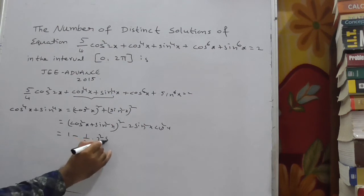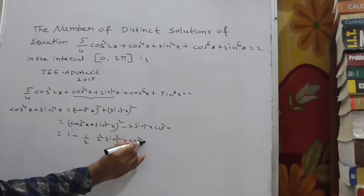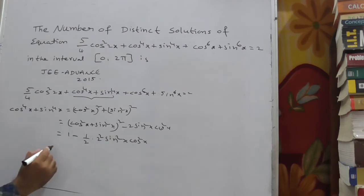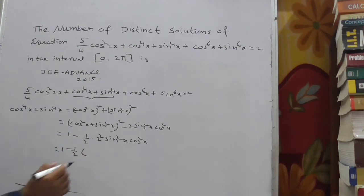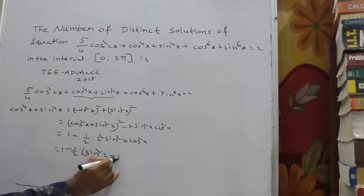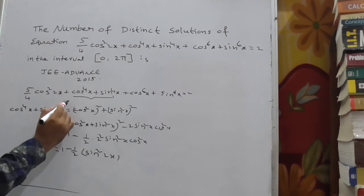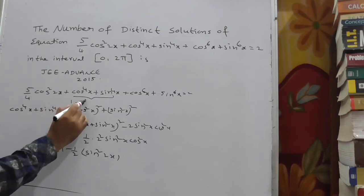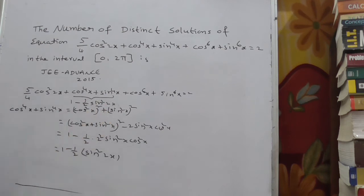Multiplying and dividing by 2: 1 − (1/2)·2sin²x·cos²x. Since 2sinx·cosx = sin(2x), we get 2sin²x·cos²x = (1/2)sin²(2x). Therefore, cos⁴x + sin⁴x = 1 − (1/2)sin²(2x).